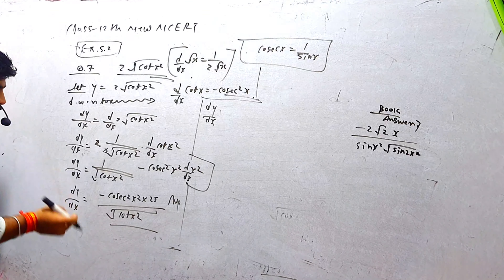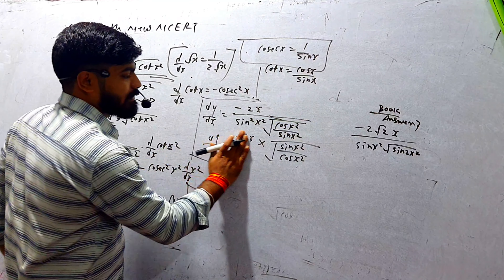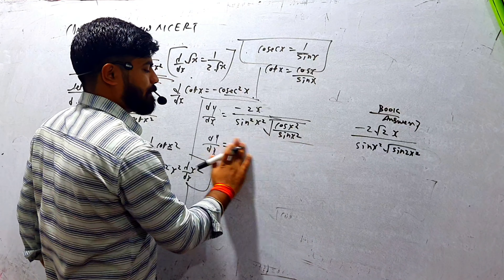dy/dx = 1/sin²(x²) into (minus 2x) into √(sin x²/cos x²)। Root के अंदर sin/cos है, denominator में जो था वो उपर आ गया। यह p/q/s वाला form है: p·s/q। मतलब: minus 2x/sin²(x²) into √(sin x²/cos x²)।